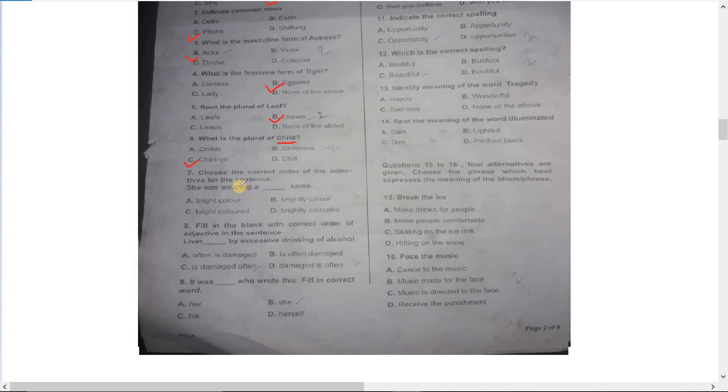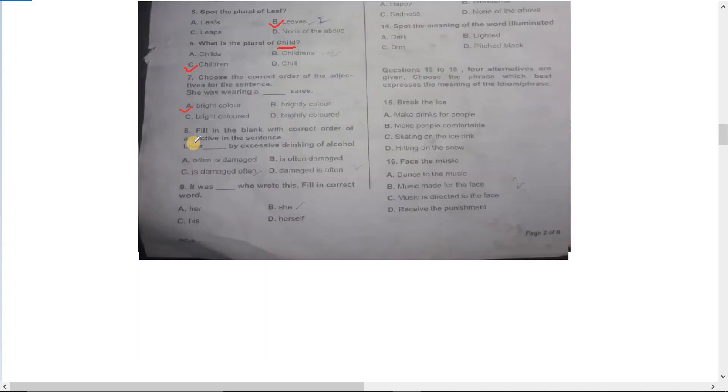Number seven: choose the correct order of adjectives for the sentence. She was wearing a bright color sari. Number eight: fill in the blank with the correct order of adjectives. The liver is often damaged by excessive drinking of alcohol. Number B.